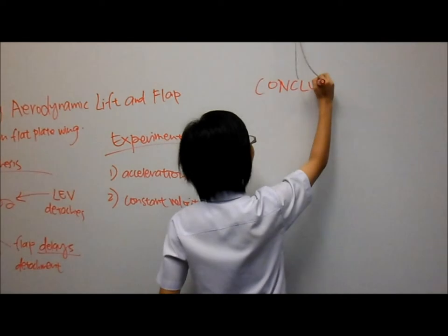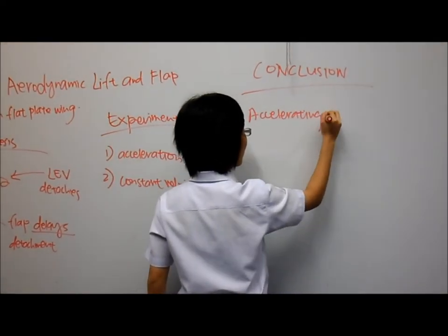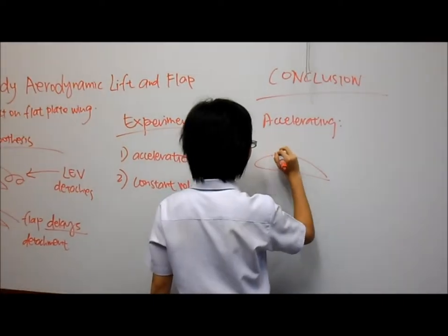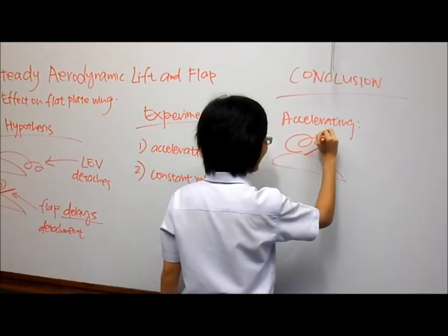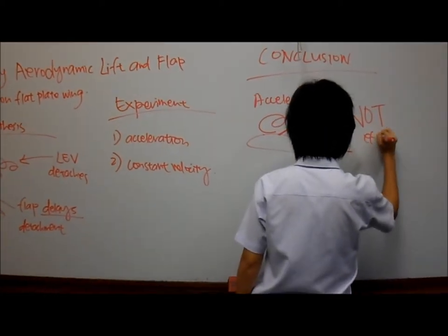In conclusion, the flap is effective under steady state conditions where the leading edge vortex growth stops naturally. The flap attached to the leading edge of the plate delays the detachment of the vortices hence increasing the overall lift generated.